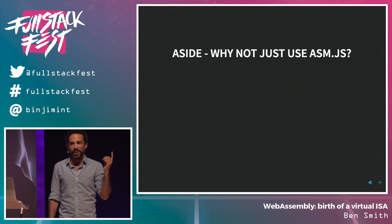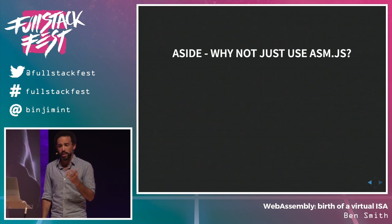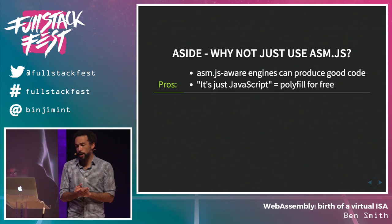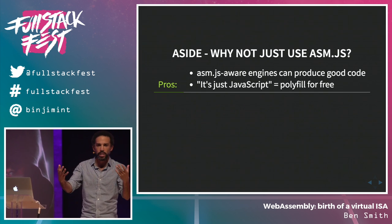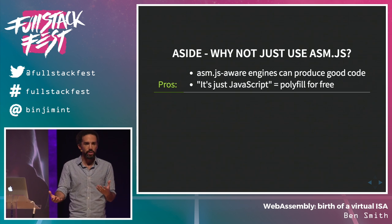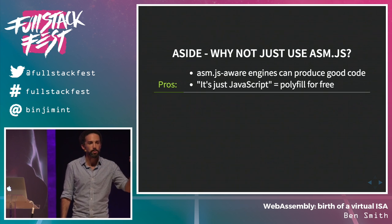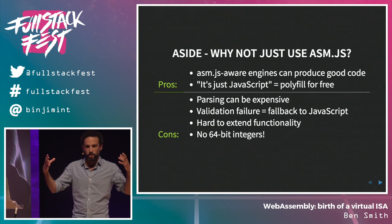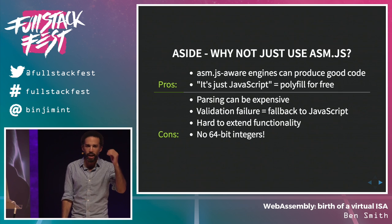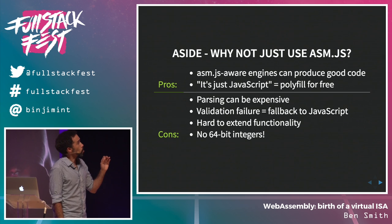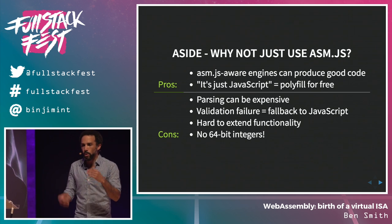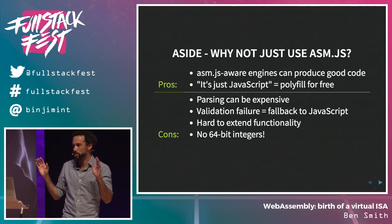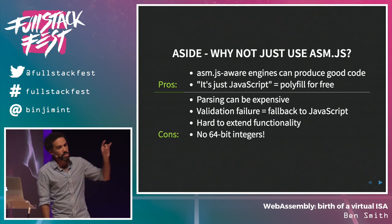ASM.JS runs fast — you've probably seen it run in Firefox. But why not just use ASM.JS? It runs quite fast in engines that support it, and it's just JavaScript. But there are problems. Parsing can be very expensive: a giant blob of C code can produce ASM.JS modules that are megabytes large, and your JavaScript engine has to parse all of that — very slow. Validation failure is another issue: when you fail validation, it has to fall back to running as plain JavaScript, and that makes it hard to extend functionality.